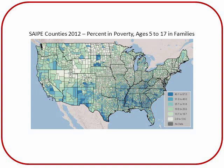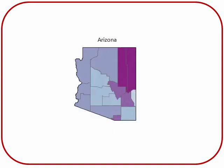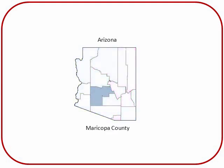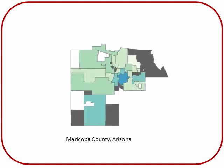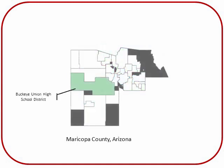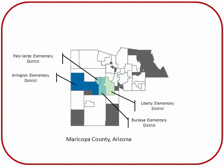There are some special issues regarding school district geography. Let's look at Arizona as an example. The county around Phoenix, Maricopa County, has a number of school districts. In Maricopa County, there are overlapping elementary and secondary school districts responsible for specific grades in the same area. For instance, the Buckeye Union High School District covers the same area as four elementary school districts.